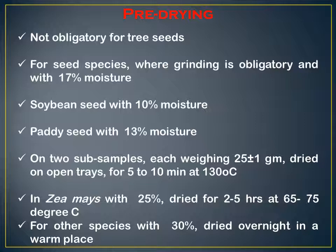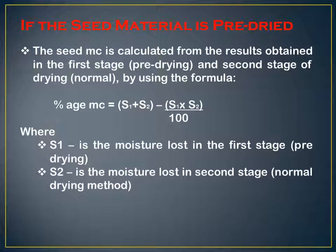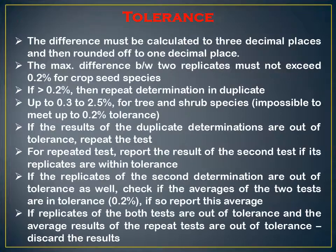For pre-drying matters — for example, soybean seed at 10 percent or 13 percent moisture, and other seeds with 15 to 25 percent moisture — pre-dry for two to five hours at 65 to 75 degrees centigrade. If the seed material is pre-dried, calculate the moisture percentage using: S1 + S2 − (S1 × S2 ÷ 100), where S1 is the moisture loss in the first stage and S2 is the moisture loss in the second stage.